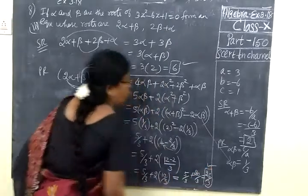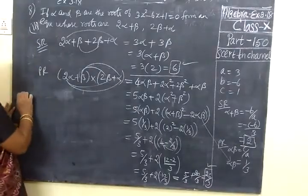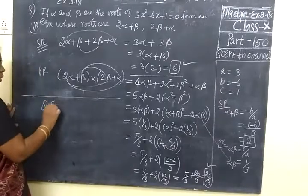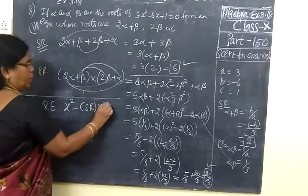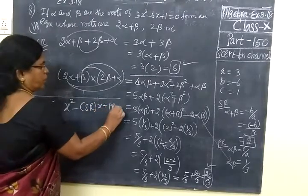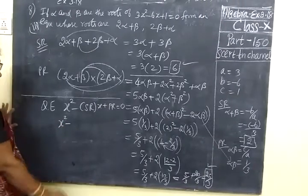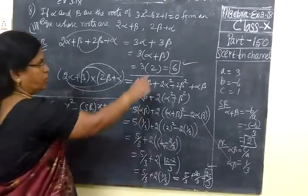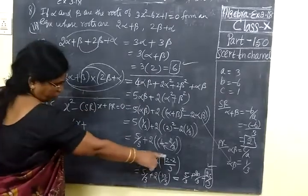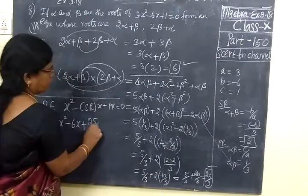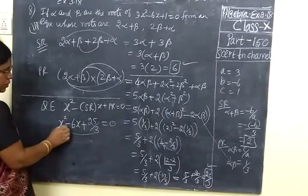We have found product of the root. Now you see, we need quadratic equation. Quadratic equation: x squared minus sum of the root x plus product of the root equal to 0. x squared minus sum of the root 6x plus product of the root 25 by 3, equal to 0.